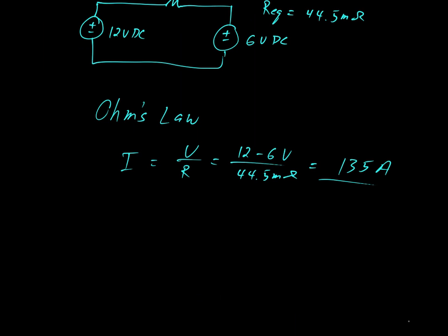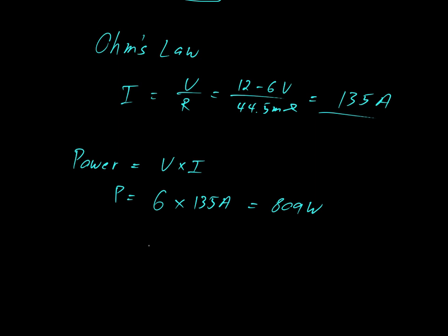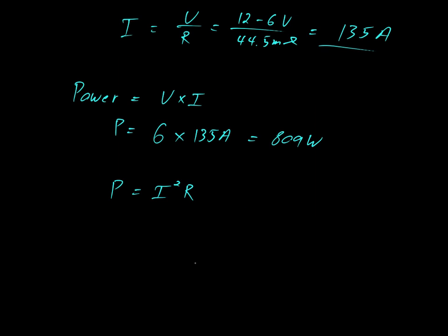We could finish there and say, that's a lot of current. But it might be useful to explore how much power is being dissipated by the system. So you recall, power is equal to voltage times current. And here we have a 6 volt difference. And the current is equal to, we said, 135 amps. That gives you 809 watts. We could go one step further, knowing that power is equal to I squared R.